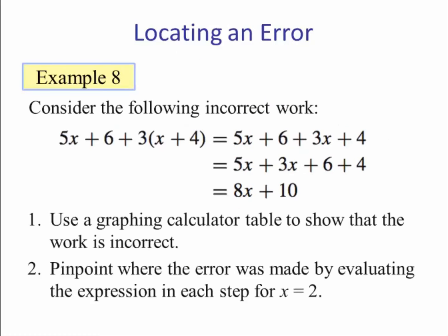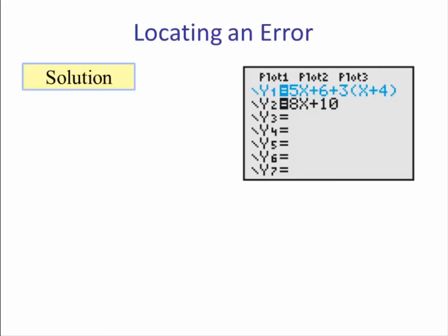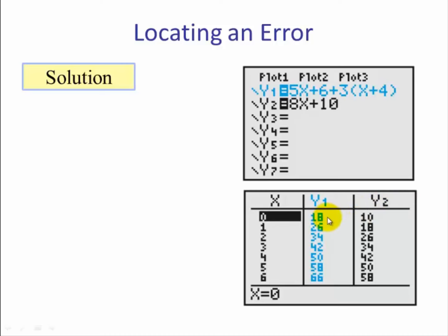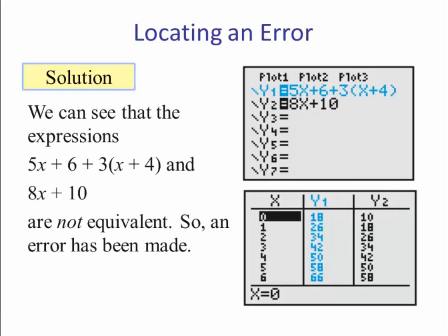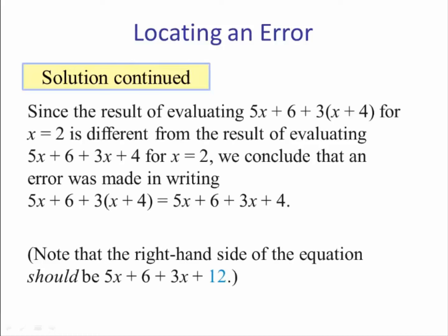Last example — Example eight. Consider the following incorrect work: five x plus six plus three times the quantity x plus four becomes five x plus six plus three x plus four. Combining like terms gives eight x plus ten. There is a mistake here. Using the graphing calculator, we put the original expression in Y1 and eight x plus ten in Y2. The table shows the values are not equivalent, confirming an error was made. The actual mistake: instead of plus four, it should be plus twelve — the person forgot to distribute the three to the four, which is a common mistake.